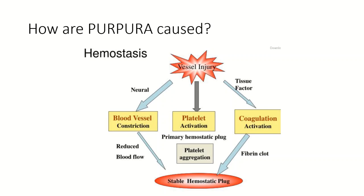How are purpuras caused? There are three factors which can be contributory: platelet-related factors, coagulation pathway-related factors, or factors pertaining to the vessel wall. In this particular lecture, we are only going to concentrate on the vascular causes of purpura — that is, we are going to discuss only the vascular purpuras.